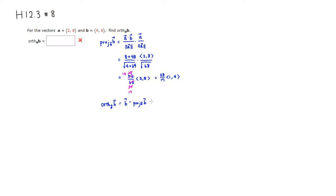What we need to do is take the original vector B, which is (4, 6), and subtract the vector projection. Multiplying out: 28 over 17 times 1 is 28 over 17, and 28 over 17 times 4 — the denominator is 17 — and 4 times 28 is 112.